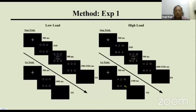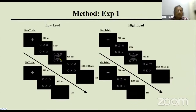Our task is similar to the stop-signal task. In the low-load condition, after fixation, the participant sees a set of letters and must find whether the letter X or N is present. If X, press the 0 key; if N, press the 2 key. On approximately 30% of trials, participants see a stop signal at the center, instructing them not to press any button.